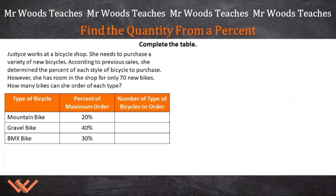First, let's read the directions, then the word problem. Complete the table. This is the table that we need to complete. It gives us percentages and types of bicycles, and the number of types of bicycles to order. Justice works at a bicycle shop. She needs to purchase a variety of new bicycles. According to previous sales, she determined the percent of each style of bicycle to purchase. However, she has room in the shop for only 70 new bikes. How many bikes can she order of each type?